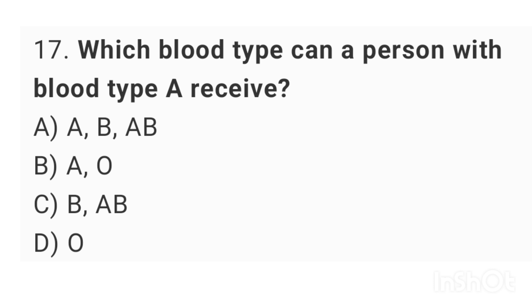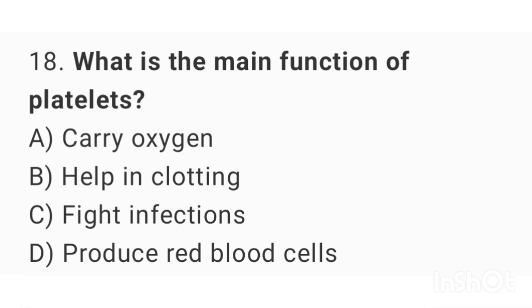Question number 17: Which blood type can a person with blood type A receive? The right answer is option B: A and O. Question number 18: What is the main function of platelets? The right answer is option B: help in clotting.